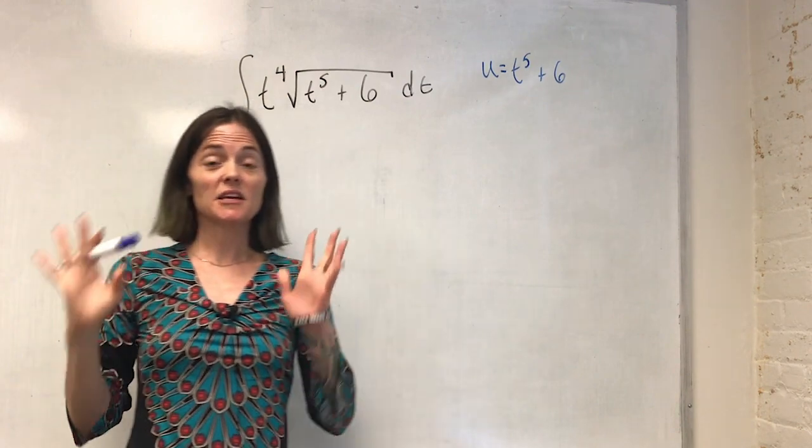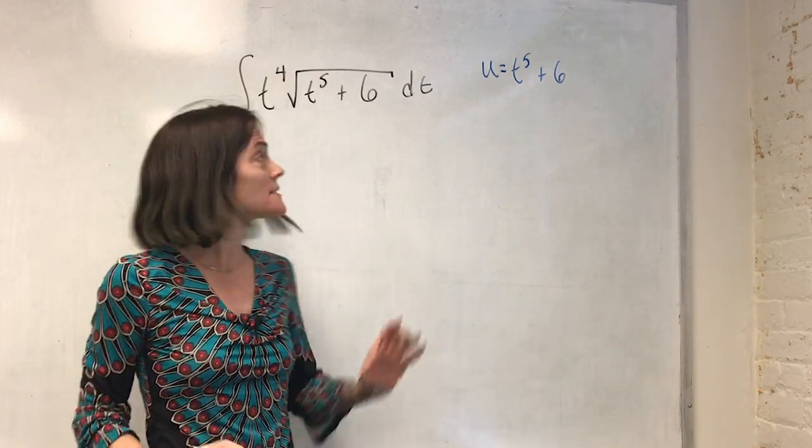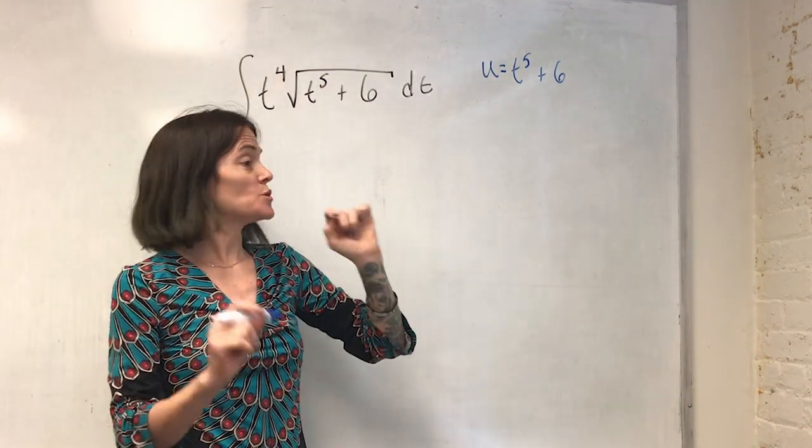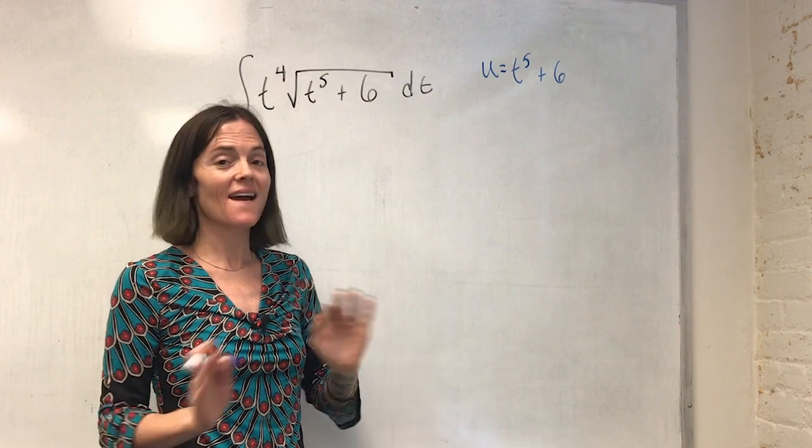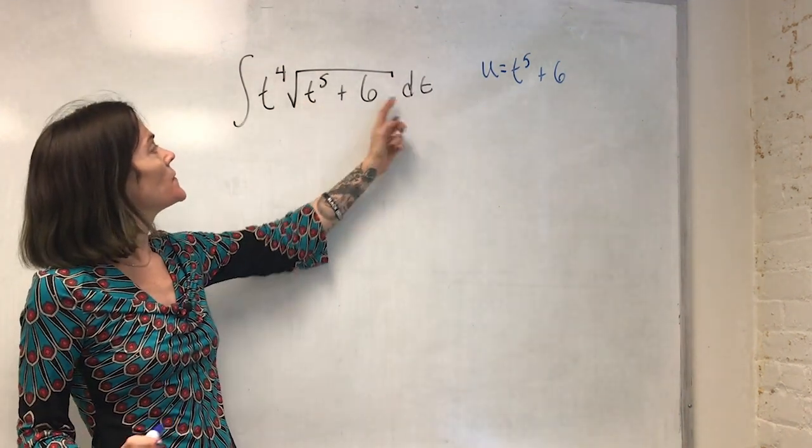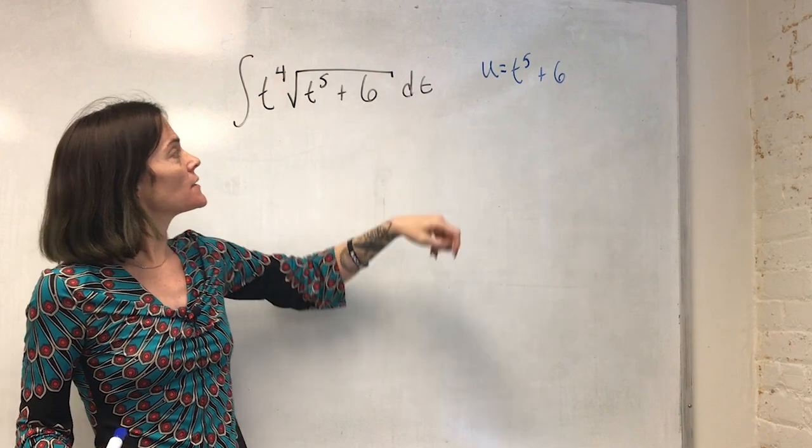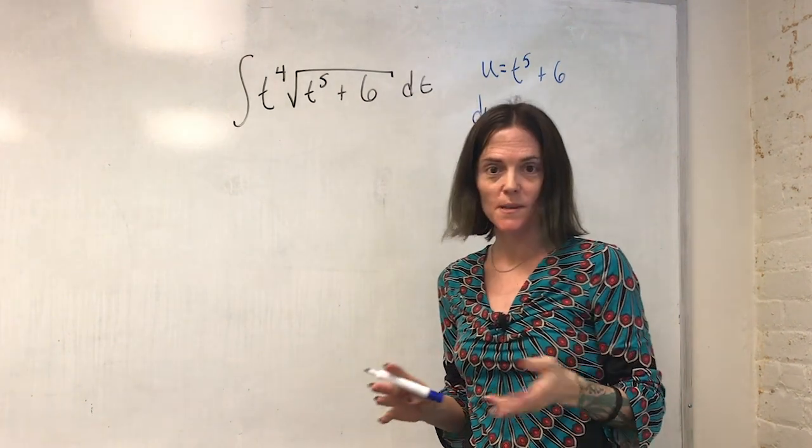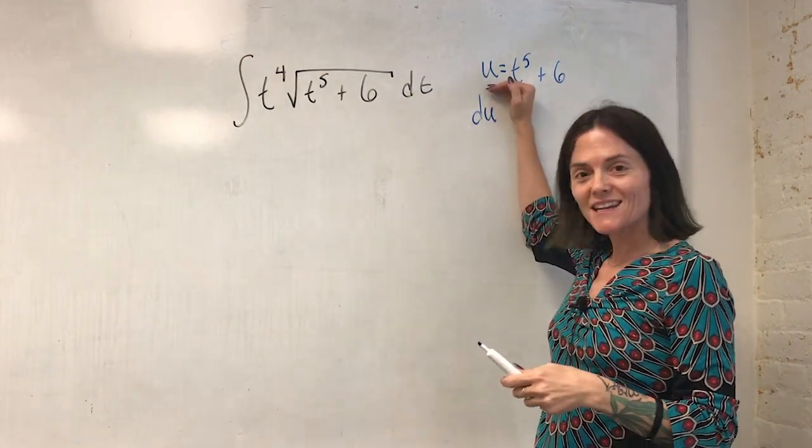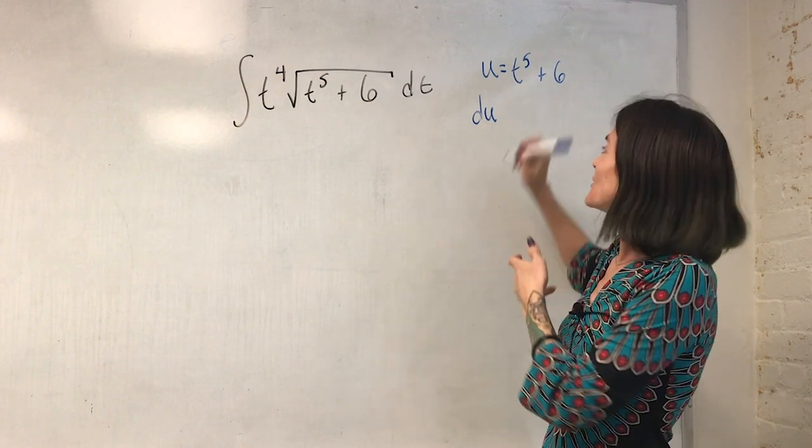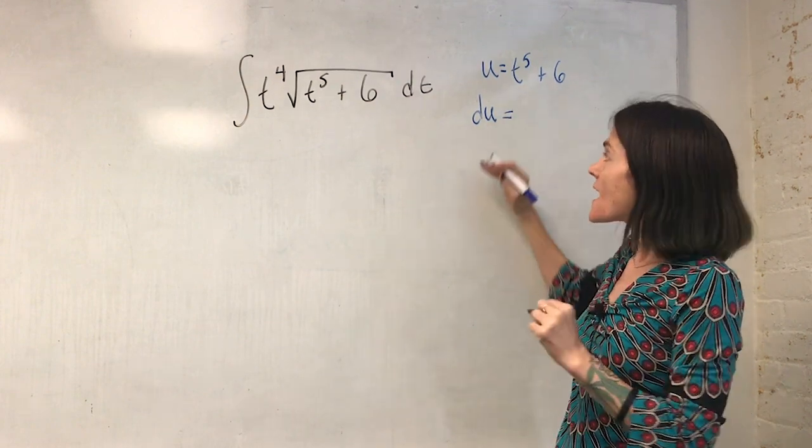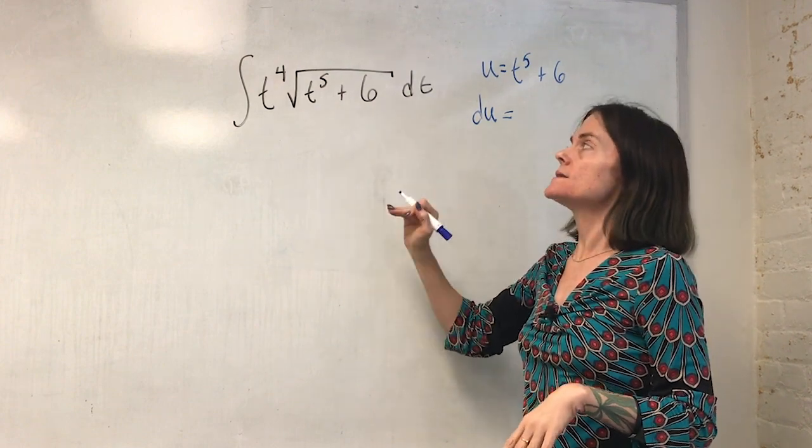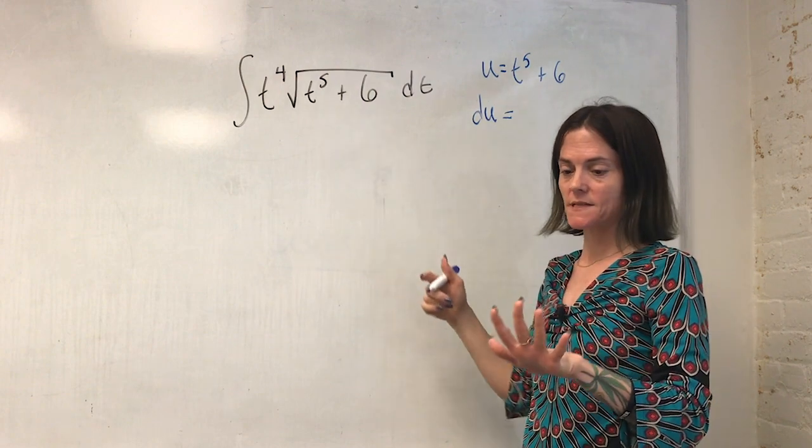Now we must in an integration by substitution problem, we must turn every single piece of the integral to something of u. You do not want to mix t's and u's at all. So here, in particular, we will replace the dt with something. So the next step, I usually think about five steps for substitution. First, find u, then calculate du. Then, as we will see, we convert to an integral of u, integrate, and then we go back to t. That's the five steps.